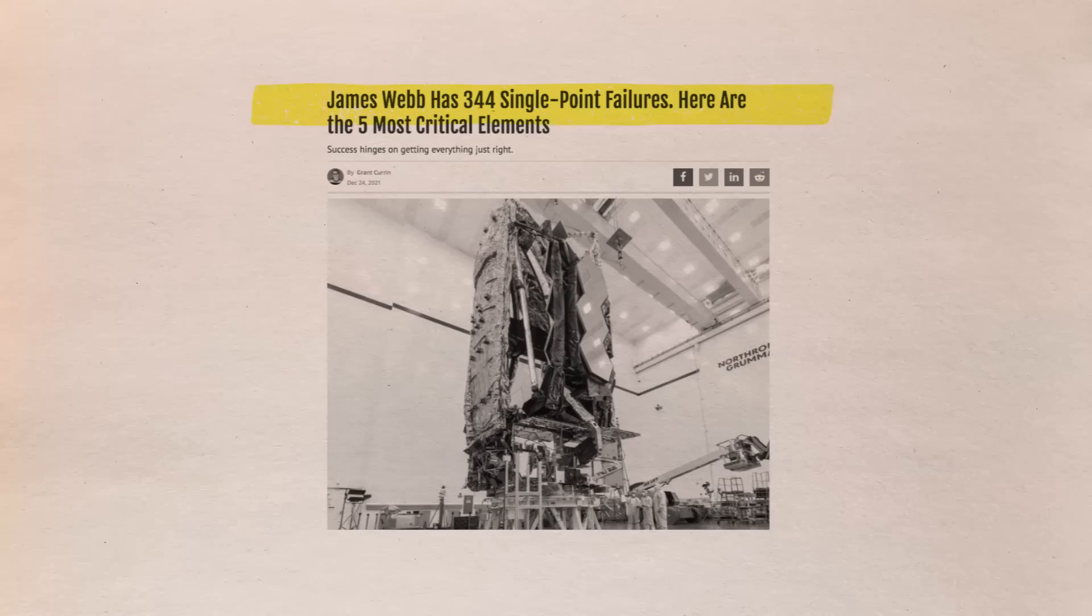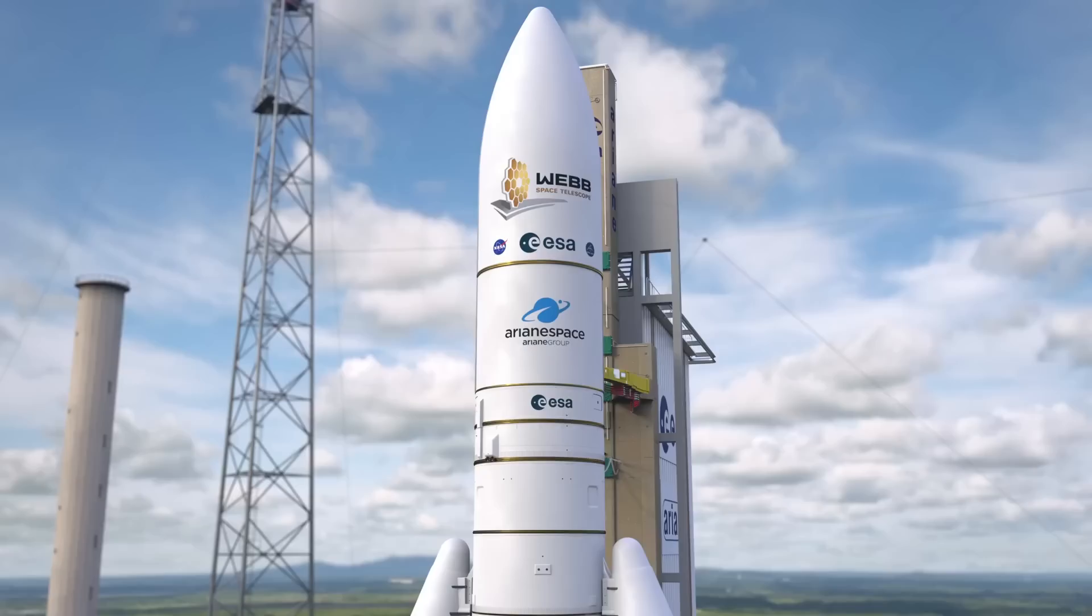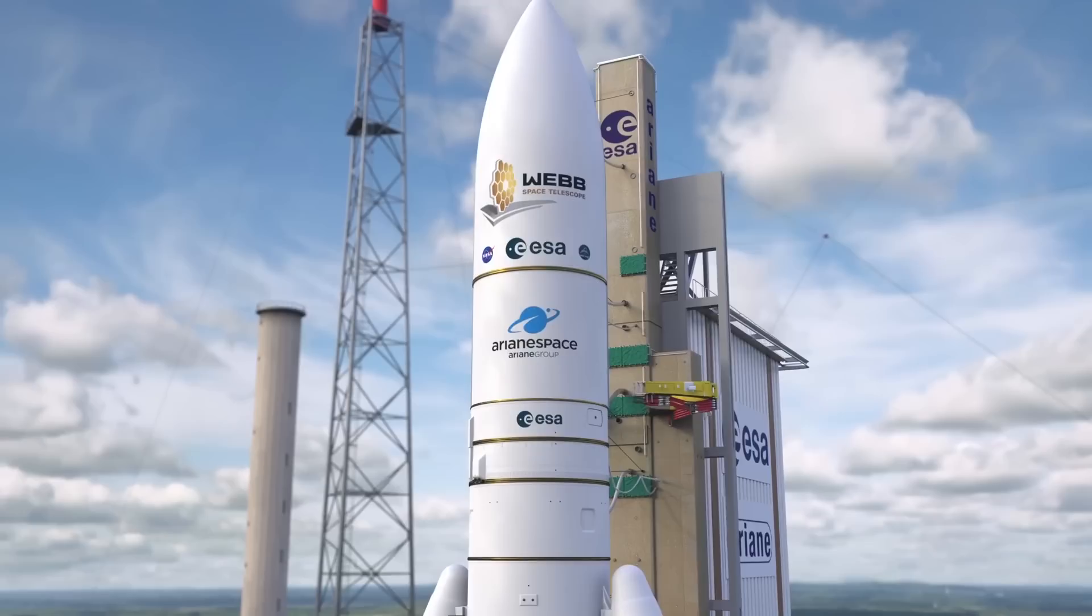According to a report published in 2018 by an independent review board, there were 344 single-point failures or tasks that needed to be completed for the mission to be successful. However, in December of last year, the telescope was packed inside the nose of an Ariane 5 rocket.